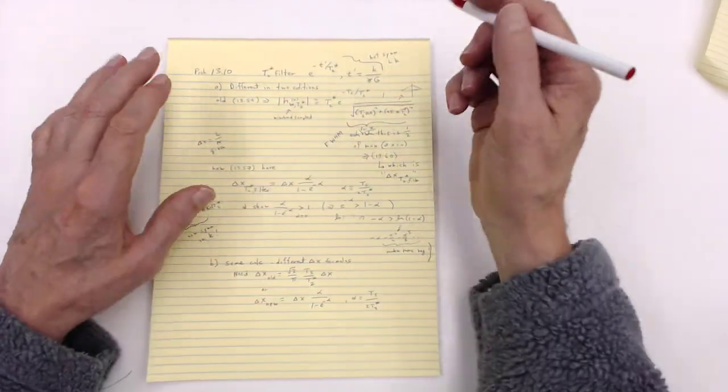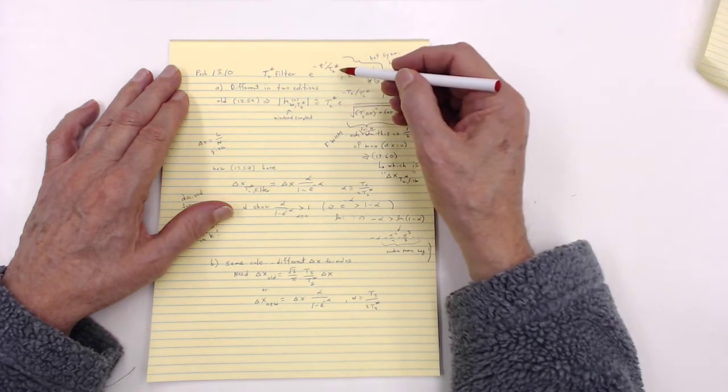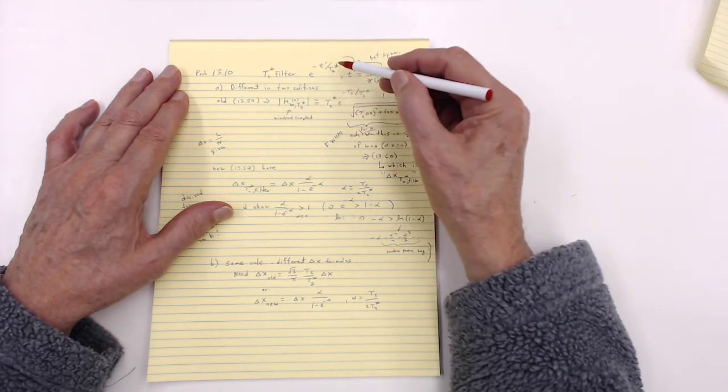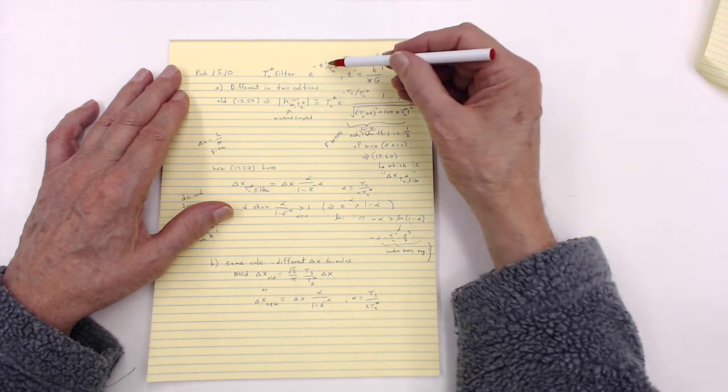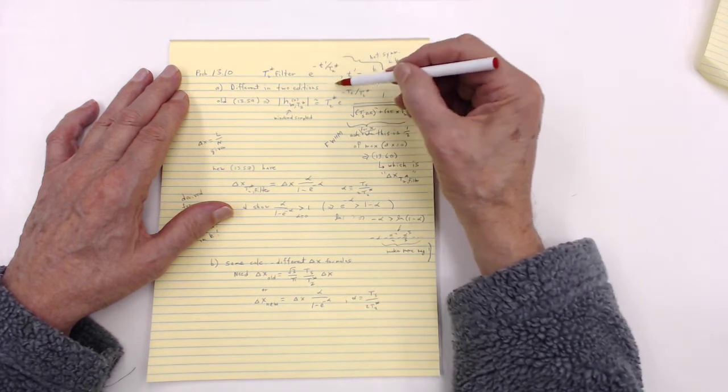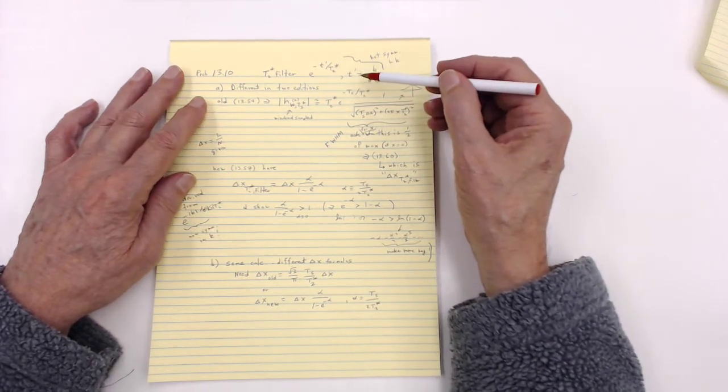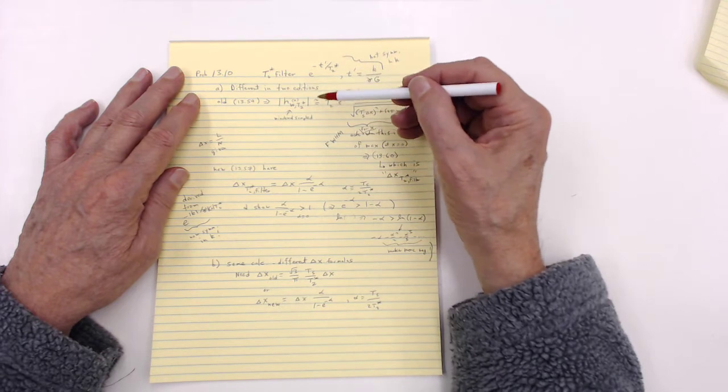Well, on top of that, remember, we've got T2 star decay. That's effectively a filter. T prime can be replaced by k, so this is a filter in k space. Now, we'll talk about that a little more, but this is different in the two editions, as I said.